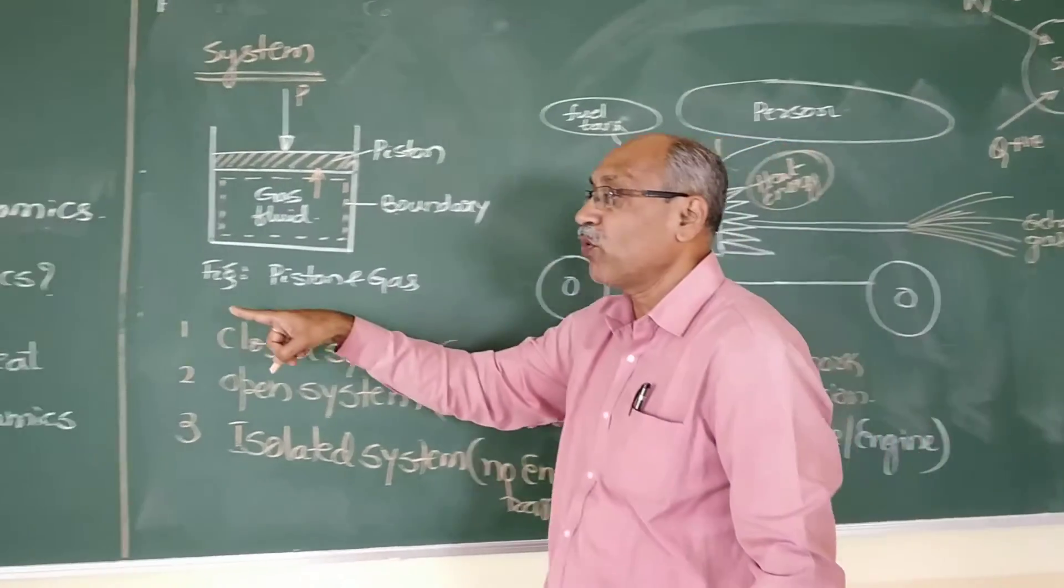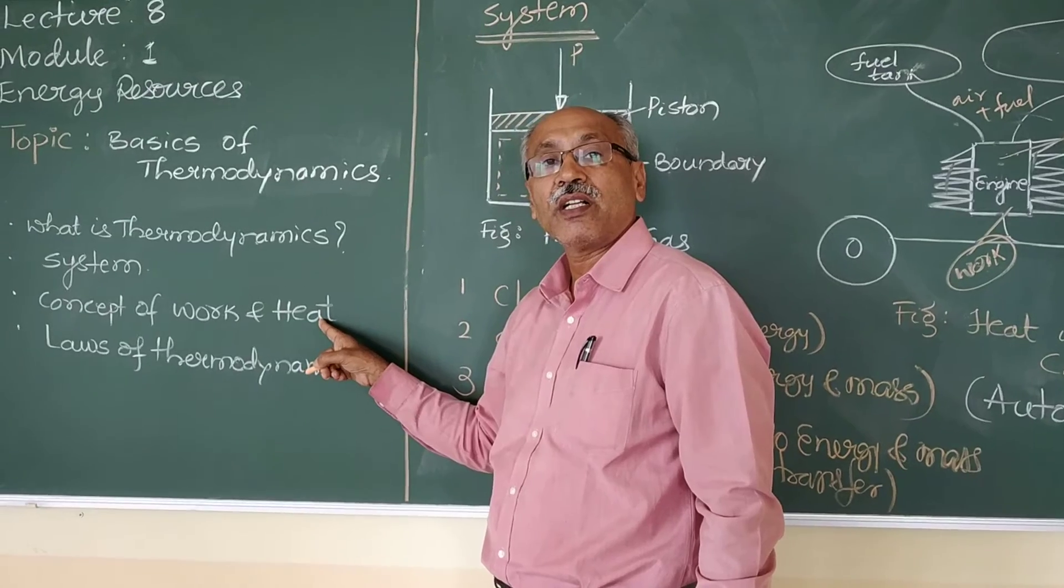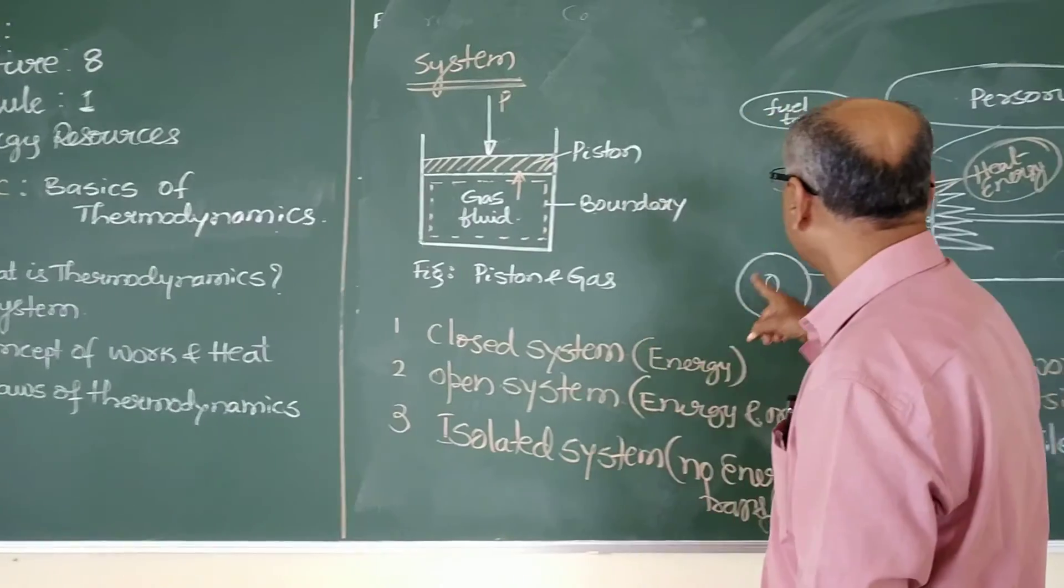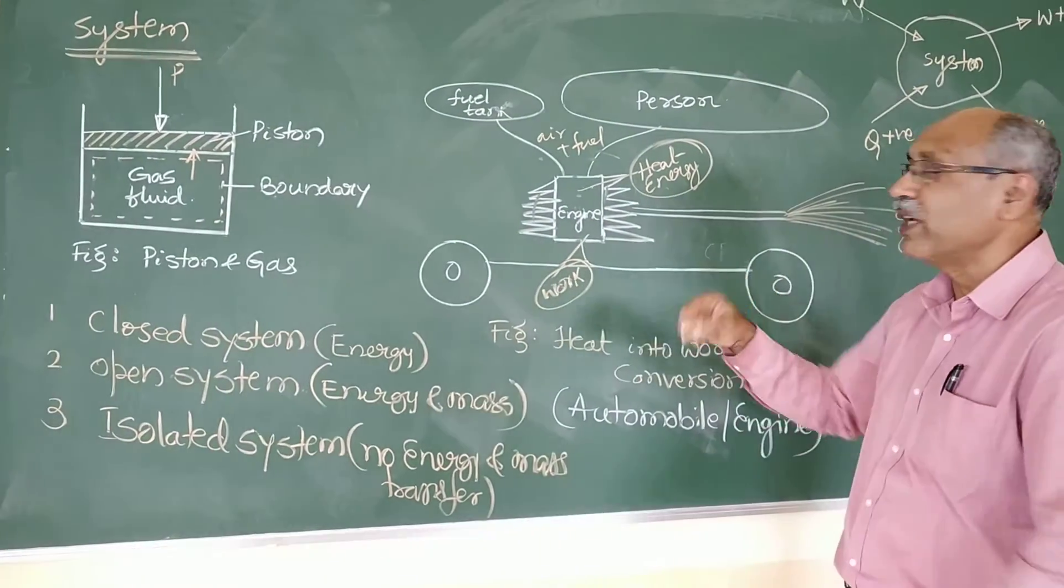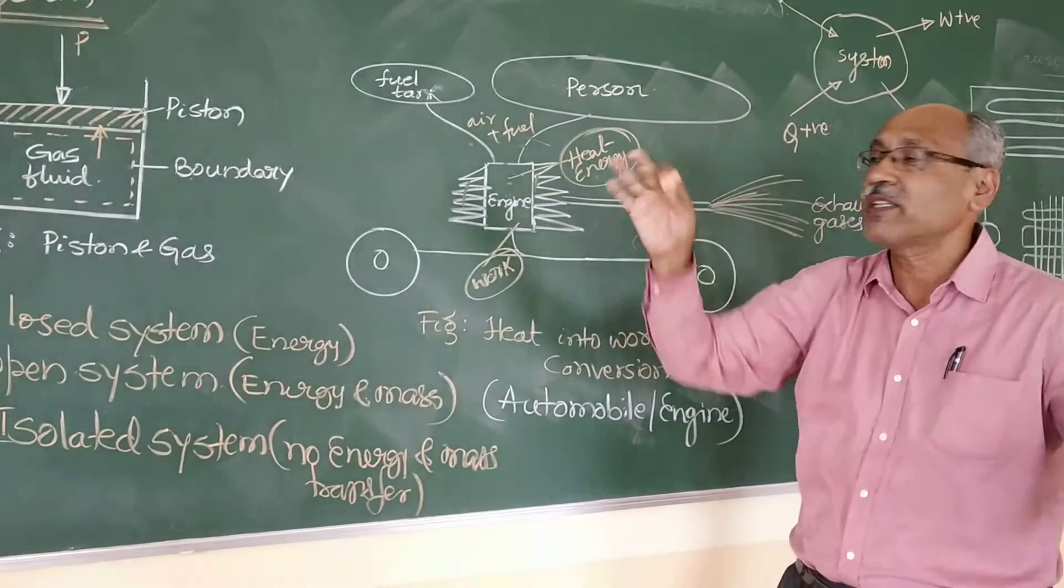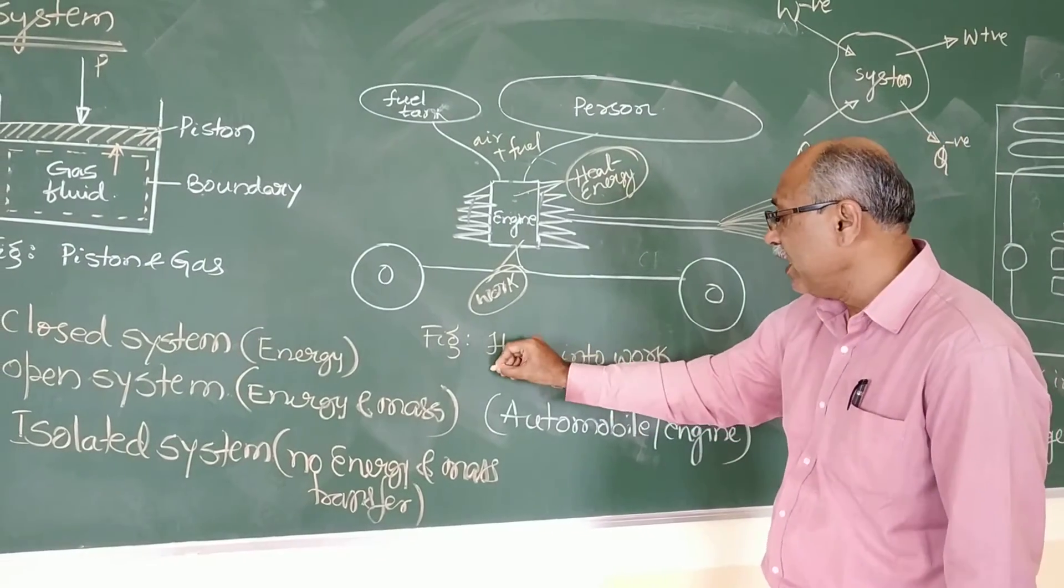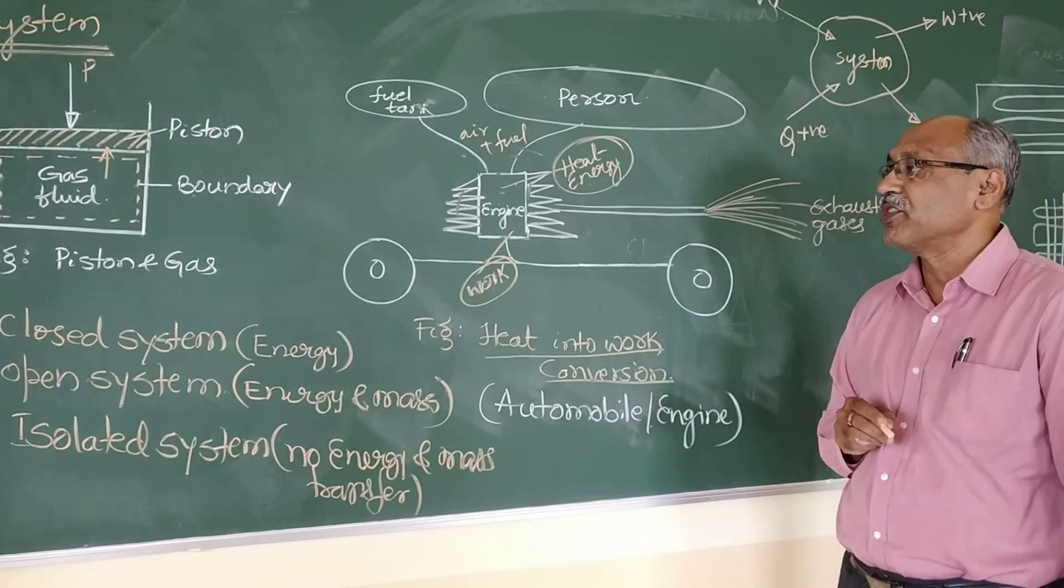Look at here. What is produced inside the cylinder? Heat energy. And it is converted into work. That is the concept of work and heat. Either work can be converted into heat or heat can be converted into work. So this is an example. Of course these two circles represent the wheels of an automobile. So here heat into work into action. This happens in the automobiles and engines.